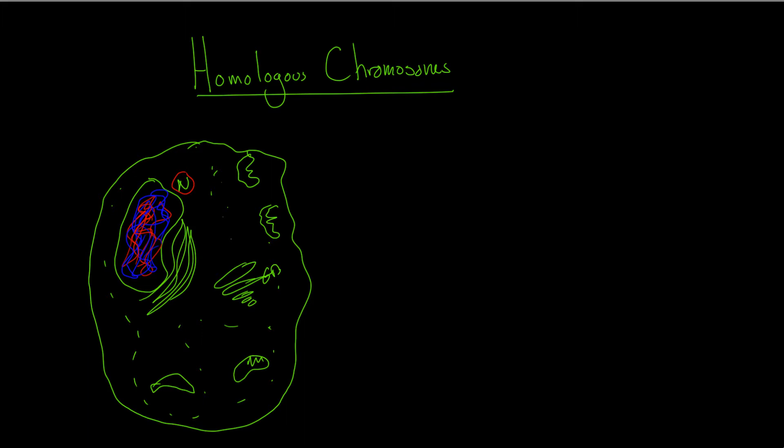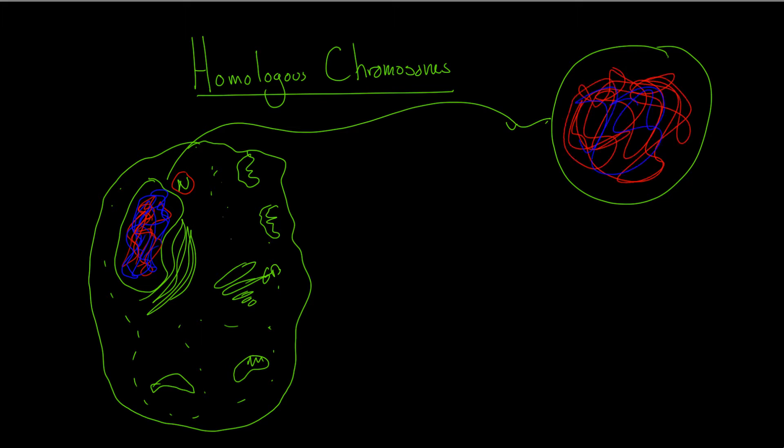Now what I'm going to do is draw the nucleus right here. So this is an enlargement of the nucleus. The blue represents the DNA from your father, and the red represents the DNA from your mother. Now remember, this is the chromatin form - it's nice and all loose and accessible, and we can get to it.